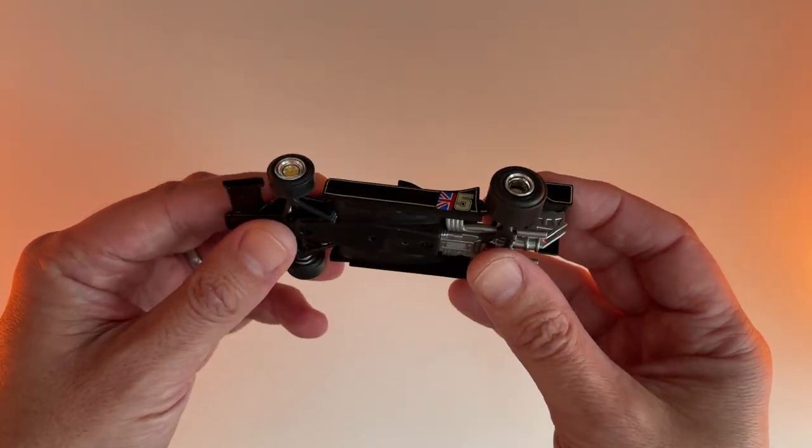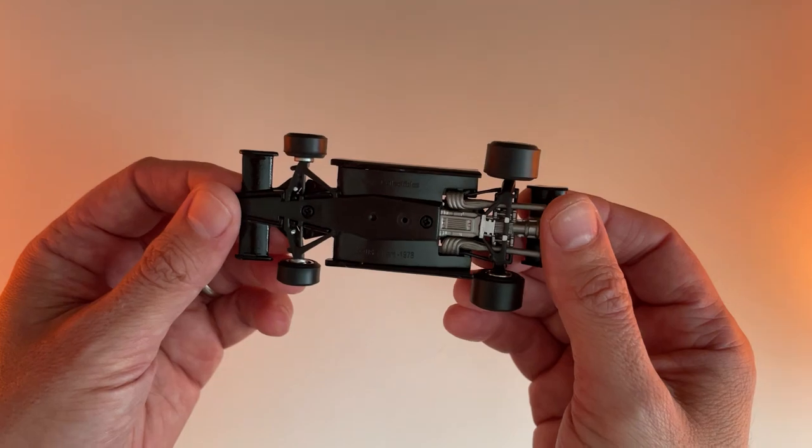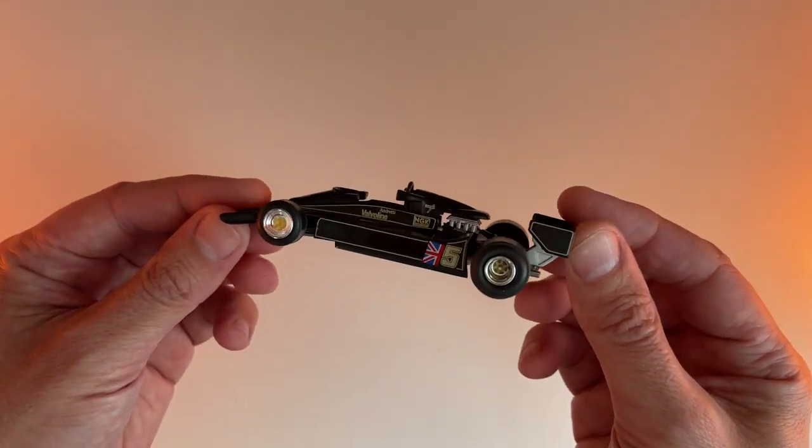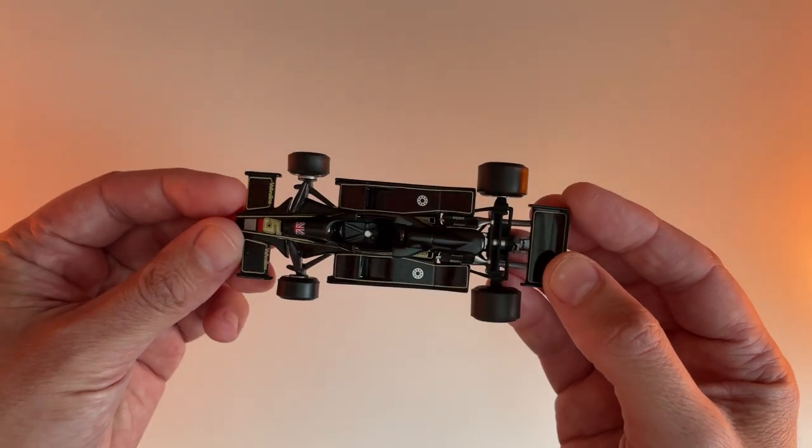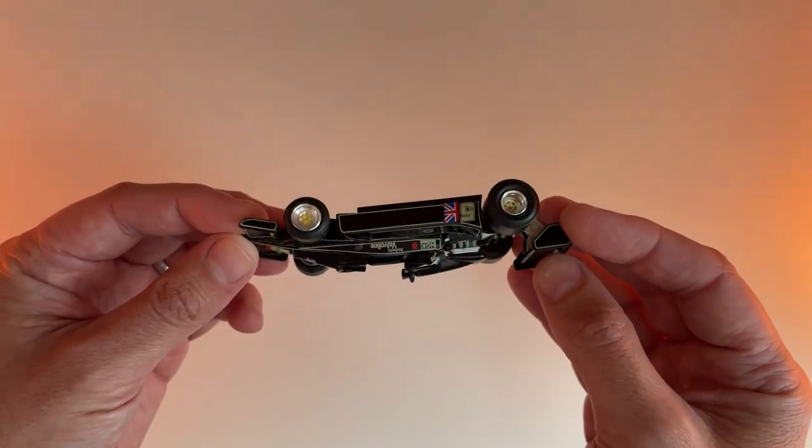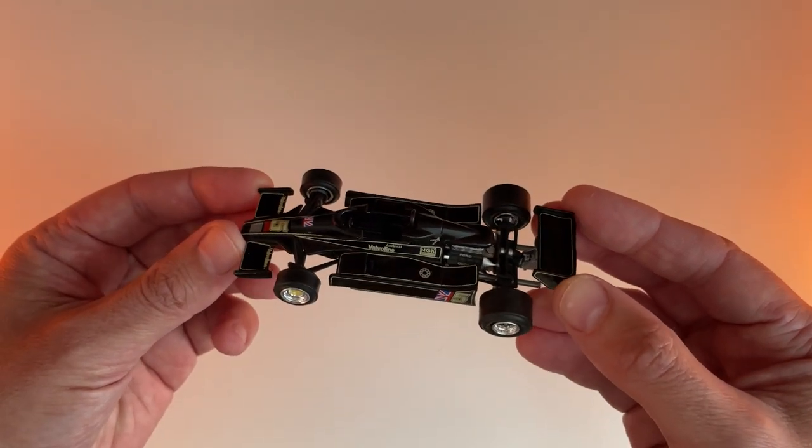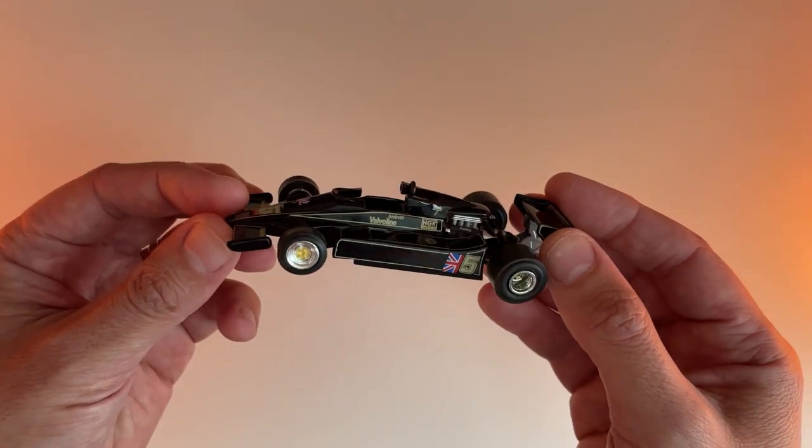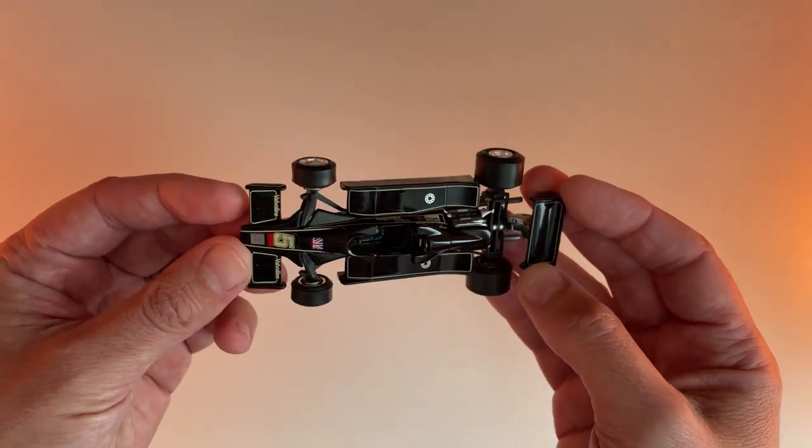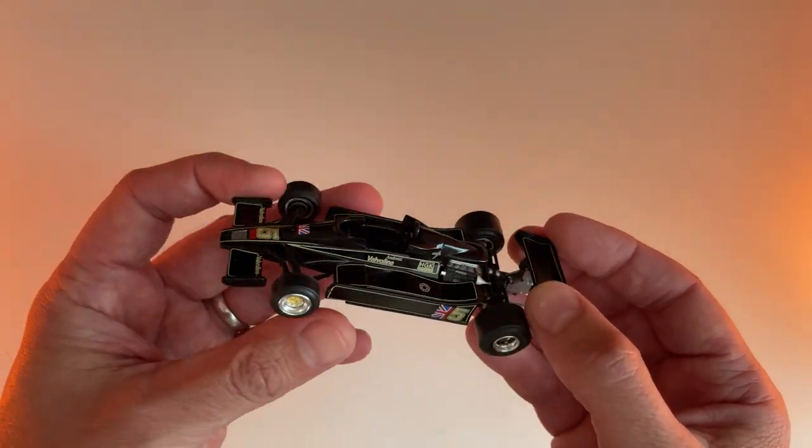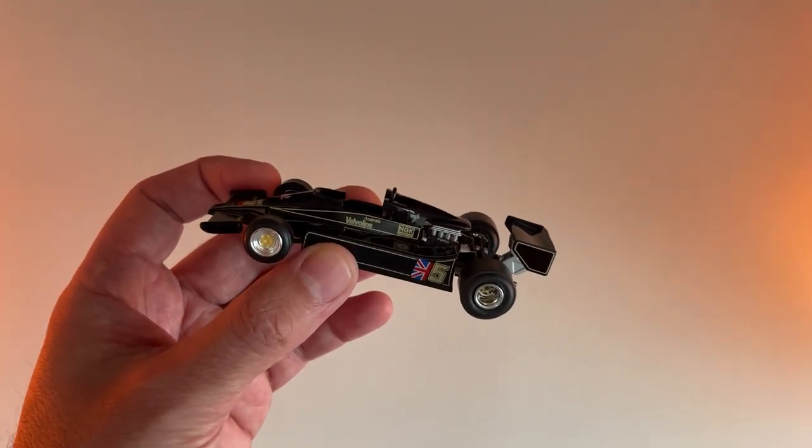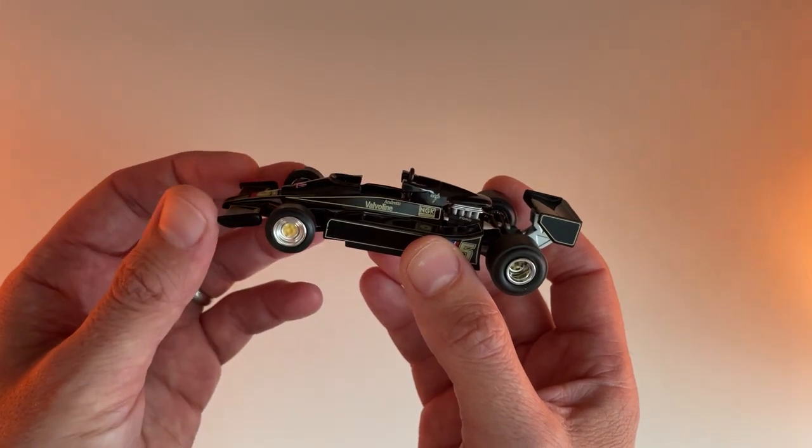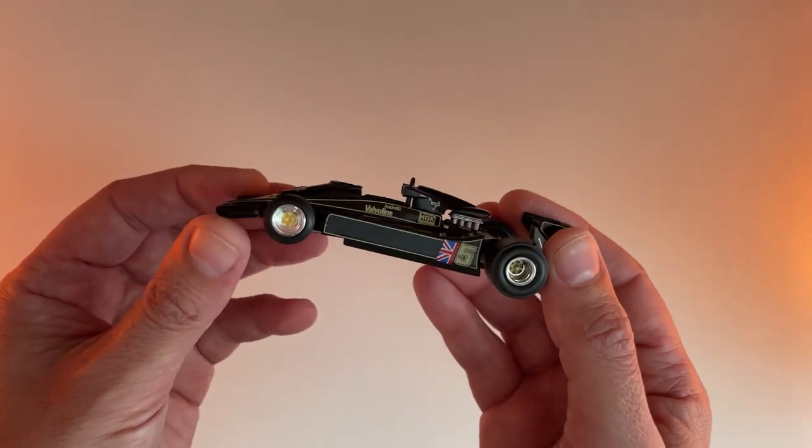This car was, of course, the great ground effect car, which is pretty much what they're trying to do in Formula 1 at the moment, hence all the porpoising, especially last year. But this was the first Formula 1 car to employ the ground effect.